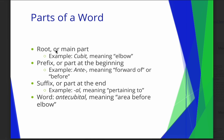The root word. There's a root word, cubit, which basically means elbow — the elbow area. That's an example of a root word. It's the main part of a word.